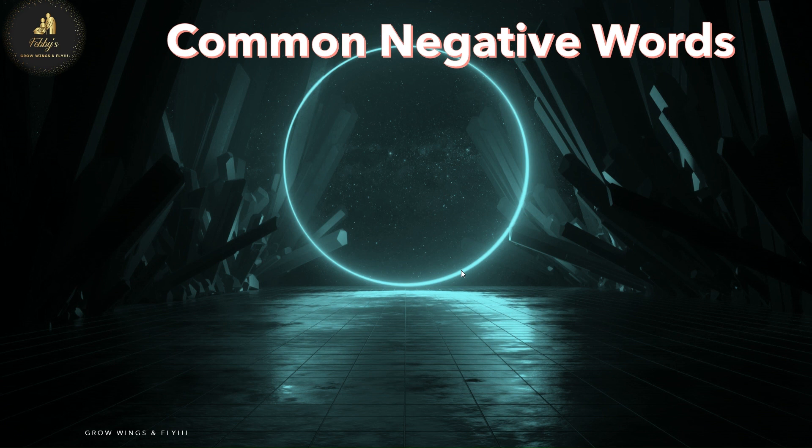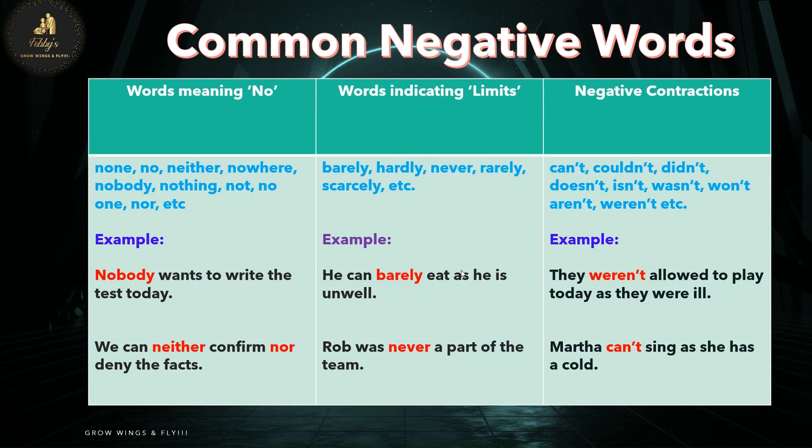We can broadly classify negative words into three categories. One: words which mean 'no'. These words are: none, no, neither, nowhere, nobody, nothing, not, no one, nor, etc.